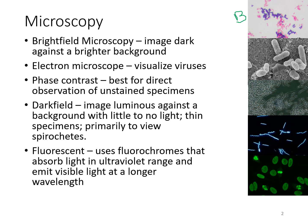An electron microscope is usually just going to be used to visualize viruses, but you can see in this image various bacteria viewed via the electron microscope. A phase contrast microscope is when the light actually passes through and reflects based on the thickness of the actual specimen source, producing areas of contrast. This is best for the direct observation of unstained specimens, and you can see an example where organisms are highlighted around their edges.